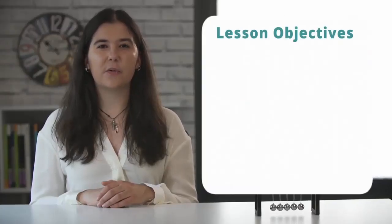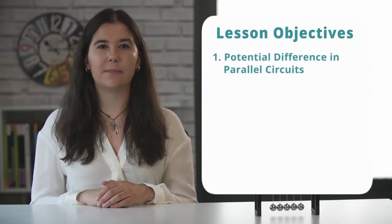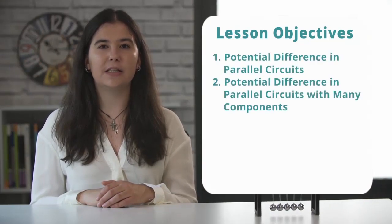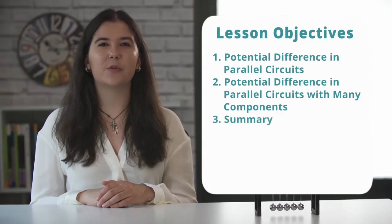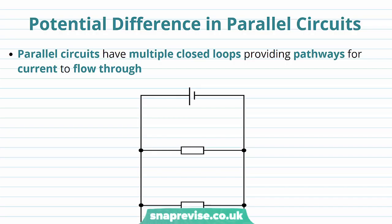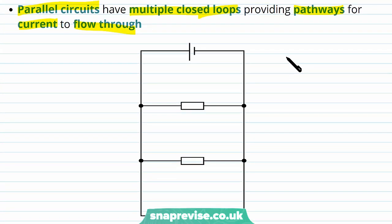In this video we're going to be looking at potential difference in parallel circuits with many components, and we're going to finish with a summary. We'll start by looking at how the potential difference varies in parallel circuits. Parallel circuits have multiple closed loops providing pathways for current to flow through. The difference between a parallel and series circuit is that a series circuit only provides one possible path for current, whereas a parallel circuit has multiple paths.